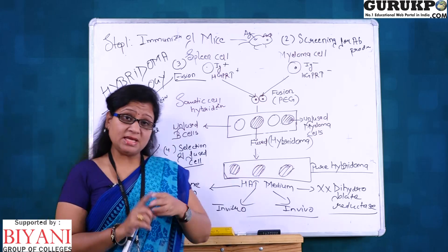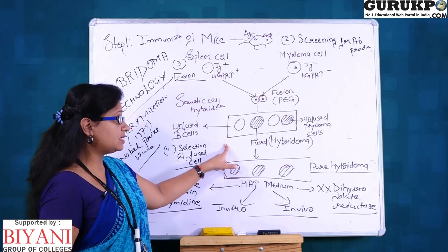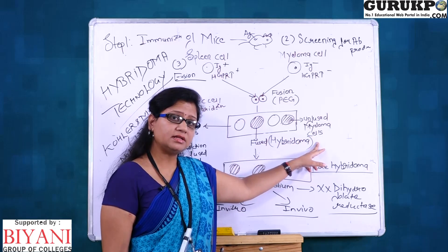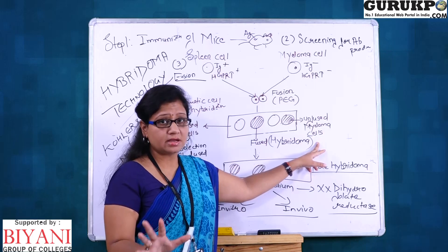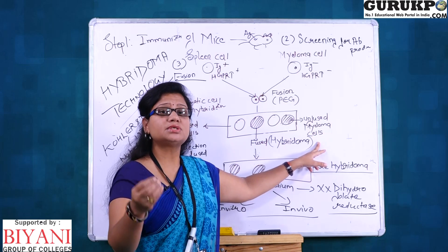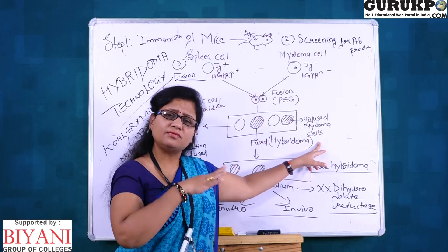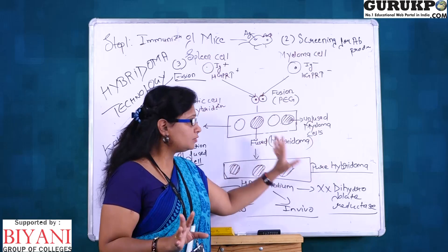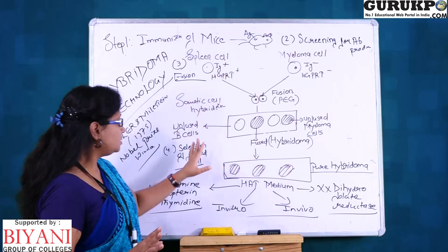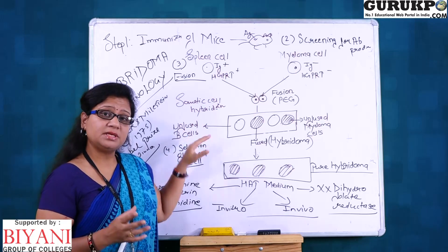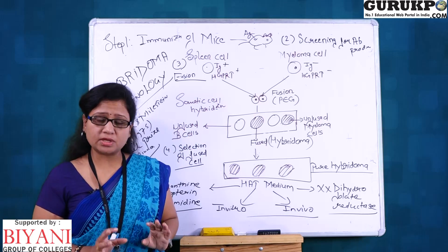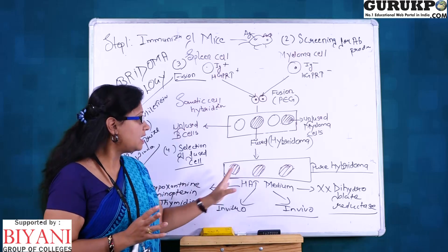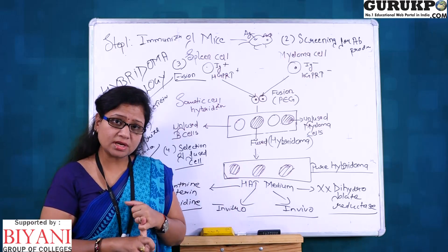In HAT medium, unfused myeloma cells die because they are HGPRT-minus and the alternate pathway for purine synthesis has been inhibited by aminopterin. Unfused B cells also die after some time because they have a limited lifespan. So which cells will grow in HAT medium? — hybridoma cells.